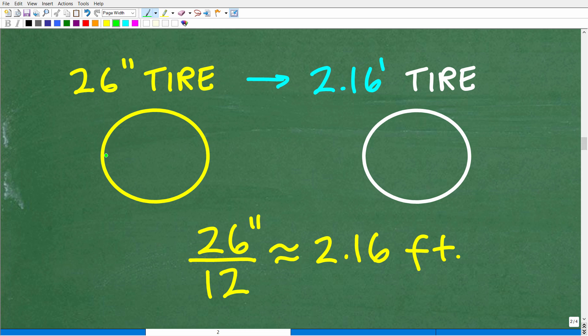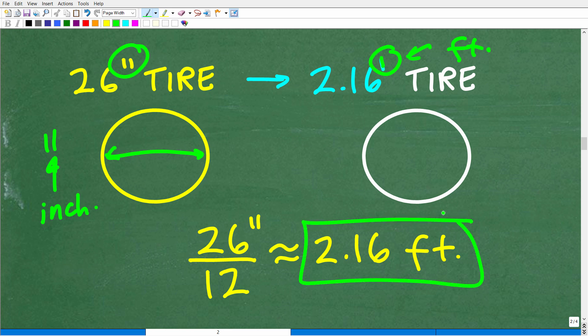So 26 inch tire, in other words, that's the width or the diameter of the tire, is the same thing as a 2.16 foot tire. Now, this is an approximation. If you're not familiar with this notation, it's important that you are. These two marks, like a quote mark, that is the notation for inches. And one mark, like an apostrophe, is the notation for feet. So how do we go from inches to feet? Well, there are 12 inches in one foot. So all we have to do is take this 26 inches and divide it by 12. We're going to get a decimal approximately 2.16 feet. So our 26 inch tire is the same thing as a 2.16 foot tire. We're all working with the units of measure of feet, not inches and feet, but just feet.